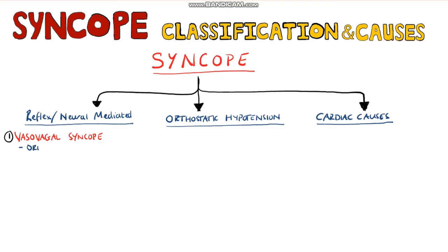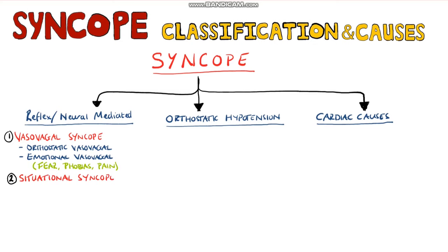Under reflex-mediated syncope, we have vasovagal syncope, which can be due to orthostatic vasovagal syncope, occurring mostly when people stand up, or emotional vasovagal syncope, that happens when the patient experiences fear, phobias such as seeing blood, or even pain.